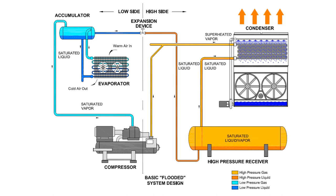The purpose of the condenser is to reject the heat absorbed in the evaporators and compressor to the atmosphere. The evaporative condenser receives high-pressure, superheated vapor from the compressor and supplies high-pressure liquid to the high-pressure receiver. The condenser uses air and water to cool the warm ammonia as it passes through a series of tubes within the condenser. Water is contained in the sump of the condenser, which is then pumped and sprayed over the ammonia coil. As the cooling medium of air and water draws the heat from the vapor, the refrigerant condenses into a liquid and flows to the high-pressure receiver.